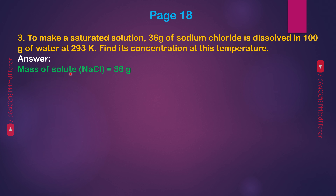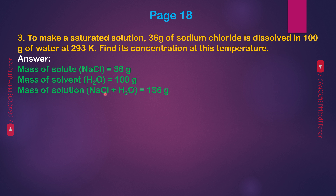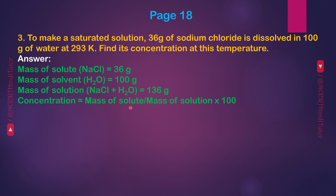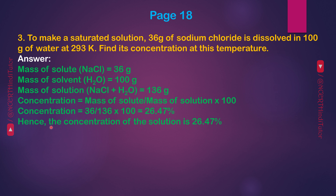Answer: Mass of solute (NaCl) = 36 g. Mass of solvent (H₂O) = 100 g. Mass of solution = NaCl + H₂O = 100 + 36 = 136 g. Concentration = (mass of solute / mass of solution) × 100 = (36 / 136) × 100 = 26.47%. Hence, the concentration of the solution is 26.47%.